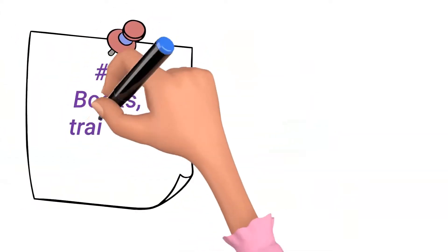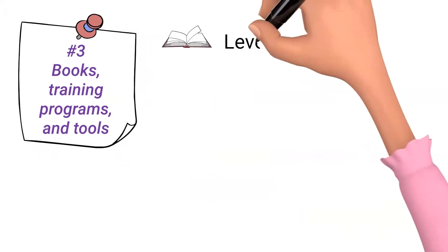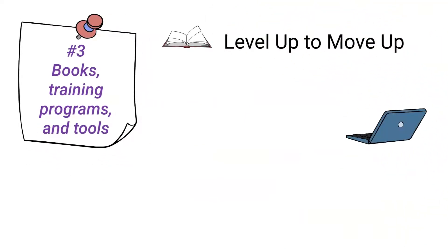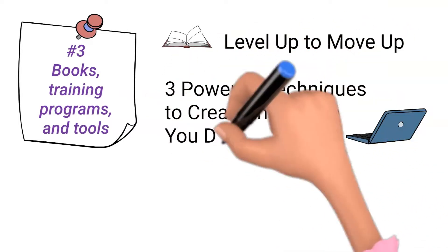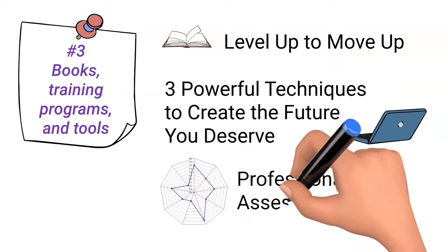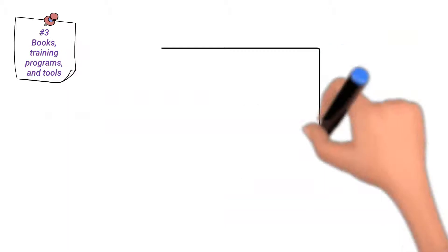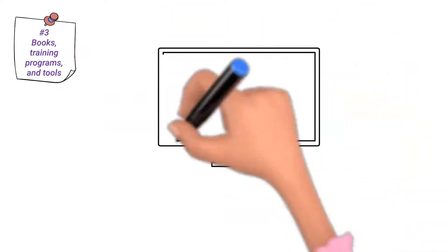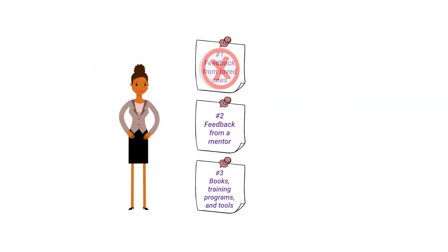Number 3: Books, training programs, and tools. Books such as Level Up to Move Up, training programs such as Three Powerful Techniques to Create the Future You Deserve, and tools such as a professional assessment can greatly assist you in defining your life vision. With access to the internet, the knowledge of the world is at your fingertips, literally. I have put a link to each of these resources in the description.